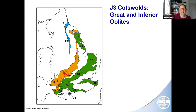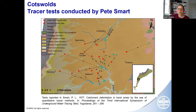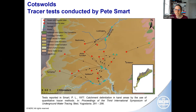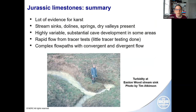Looking at the Great and Inferior Oolites in the Cotswolds, focusing on work that Pete Smart did in the 1970s in the area just north of the M4 between Chippenham and Bath. Pete demonstrated 29 connections, mostly from stream sinks, over long distances up to five kilometres. The mean velocity from all these tests was two kilometres per day — very rapid. There was some tailing, and Pete reported velocities based on last arrival times with a mean of 150 metres per day — still quite rapid. The mean recovery was around 43 percent, which is high. This area again shows complex karst pathways with rapid flow and low attenuation.